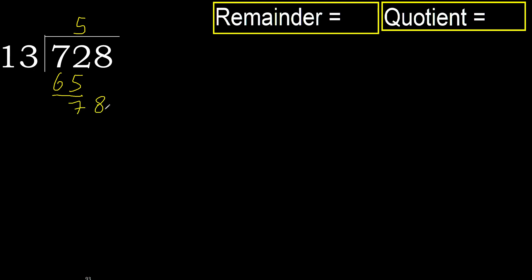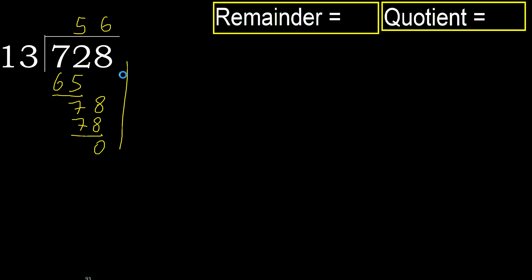78. 13 multiplied by 7 is greater; multiplied by 6 is 78, is not greater. Ok, subtract.